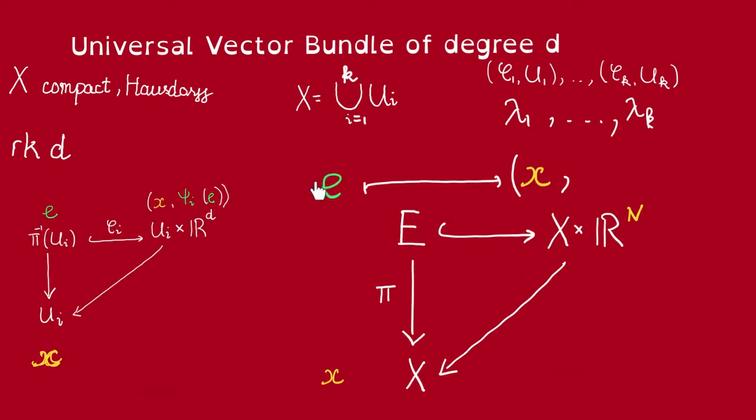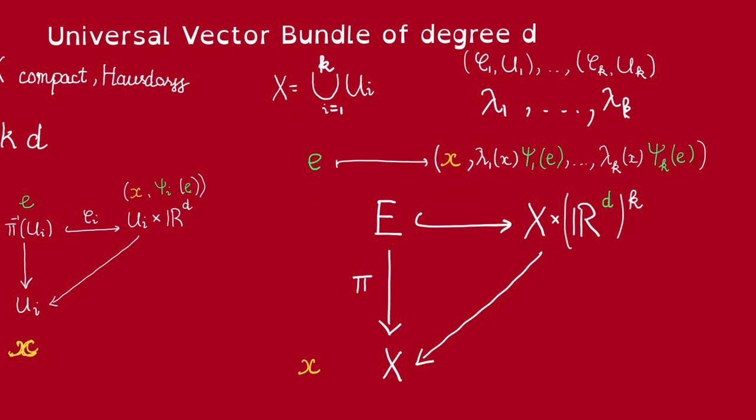Then given a point e here lying over this point x, we can send this e to the point (x, lambda_1(x) psi_1(e), and so on). Again we need to use this lambda_i because these psi_i are only defined on a subset of this total space. Then observe that this is a well-defined point of X times R^d to the k, because each of these points here is a point in R^d and here you have k of them.